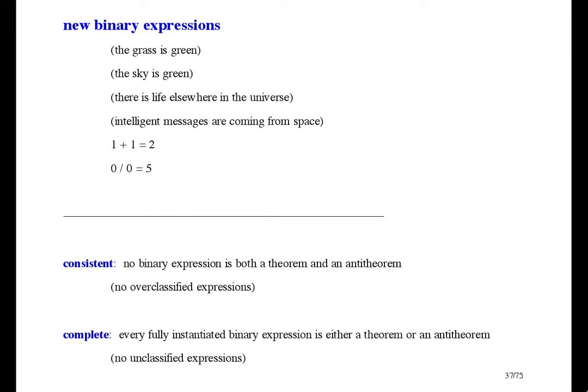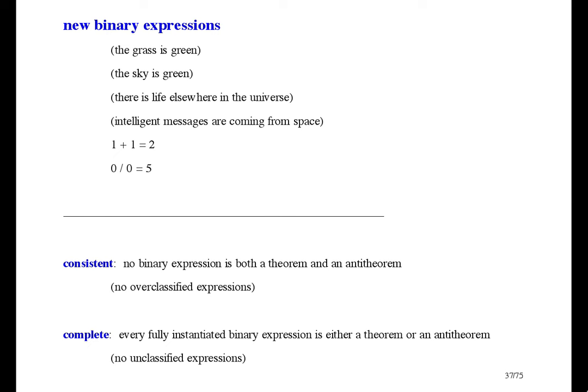Finding out if a binary expression is a theorem or anti-theorem is called proving, and there are five rules for how to do that. The first rule is the axiom rule. Long ago, mathematicians thought that some things in mathematics were obviously true, and those things were called axioms. For example, it was obvious to them that parallel lines never meet, so that was an axiom. Later, mathematicians discovered that there are interesting non-Euclidean geometries in which parallel lines do meet. Every single thing they thought was obviously true turned out to be just a choice.